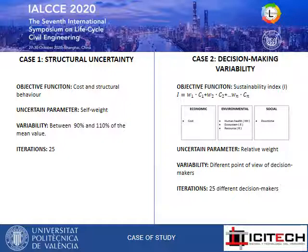The first case study represents the possible uncertainties on parameters defined for the structural calculation. In this case, we are looking for the bridge with the lowest cost and the best structural behavior by varying the self-weight. The second case study represents the variability in decision-making problems. In this case, the aim is to obtain the most sustainable design when faced with economic, environmental, and social criteria, whose importance can vary depending on the point of view of each decision-maker, represented by the relative weights.